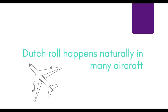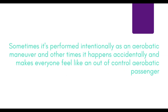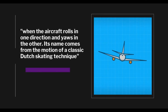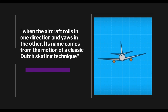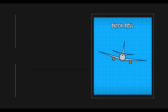The Dutch Roll happens naturally in many aircraft. Sometimes it's performed intentionally as an aerobatic maneuver, and other times it happens accidentally and makes everyone feel like an out-of-control aerobatic passenger. The Dutch Roll happens when the aircraft rolls in one direction and yaws in the other. Its name comes from the motion of a classic Dutch skating technique.